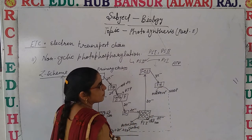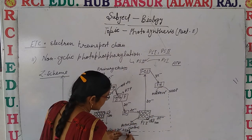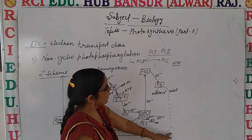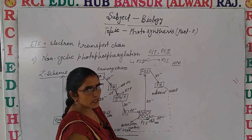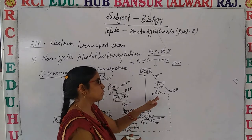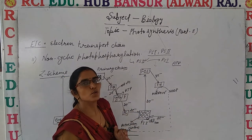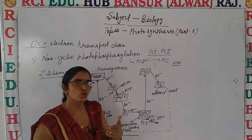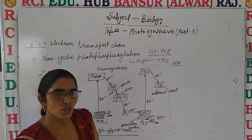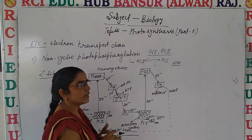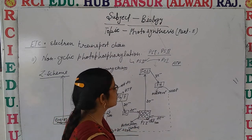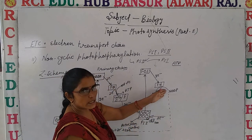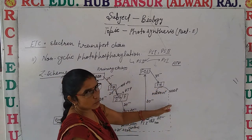When the electrons reach ferredoxin, protons are released. These protons combine with NADP, reducing it to form NADPH + H⁺. So this is the extra step in non-cyclic photophosphorylation compared to cyclic — both ATP and NADPH₂ (or NADPH + H⁺) are formed. This represents the electron movement through ferredoxin and ultimately to NADP reductase.